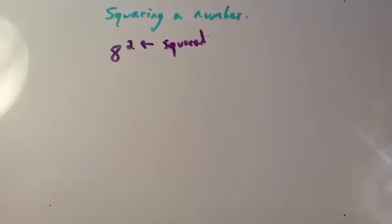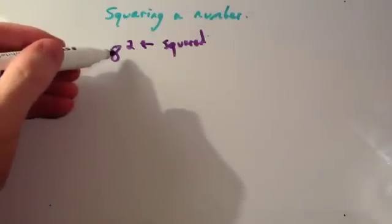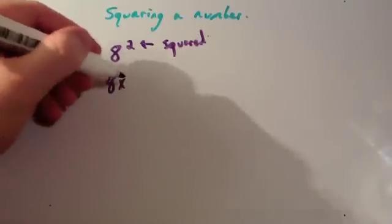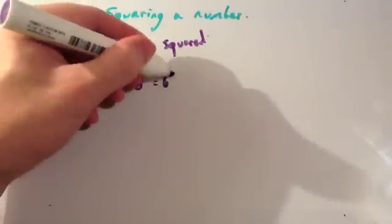To square a number, you multiply it by itself. So this is saying 8 squared, so you're going to do 8 times 8. So you do 8 times 8, and the answer would be 64.